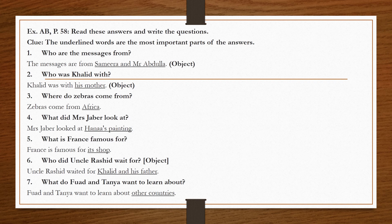Number five: 'France is famous for its shops.' We underline 'its shops' — a thing, so we use 'what.' The auxiliary 'is' is present and the subject is 'France.' Result: 'What is France famous for?'